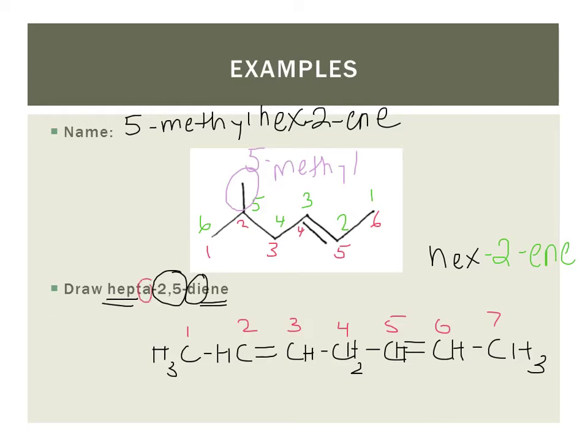Now you'll notice there's an A here, hepta-2,5-diene, and that is usually associated with having one of those little prefixes.